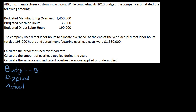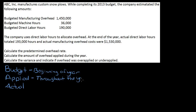Budgeted overhead is done at the beginning of the year, before any work is completed. Applied overhead happens throughout the year — as the company is doing jobs, they will apply overhead to those jobs. Actual overhead is figured out at the end of the year, and this is what the company actually spends in dollars.